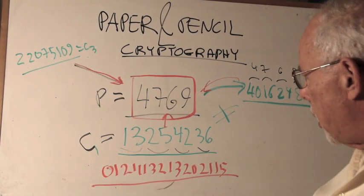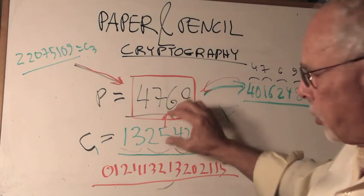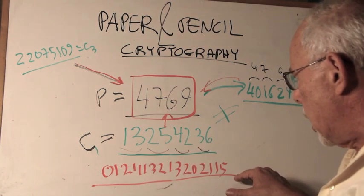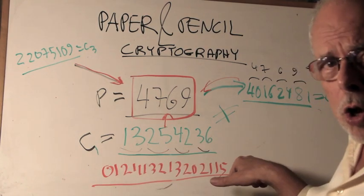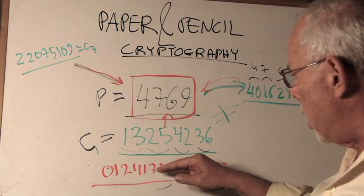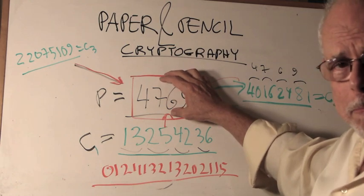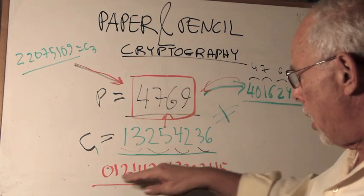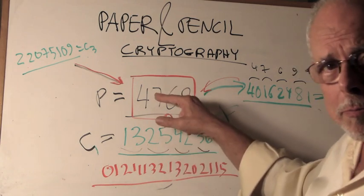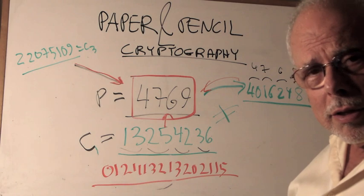Now, if a hacker will see this, and he has no idea, obscurity, how we derive this from the PIN, he will have a hard time going backwards. That's a paper and pencil example.